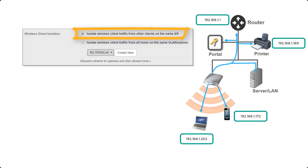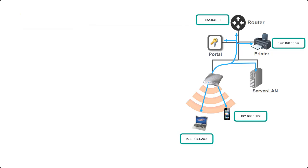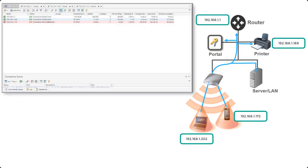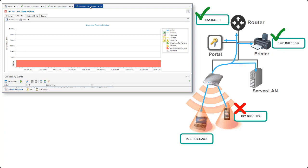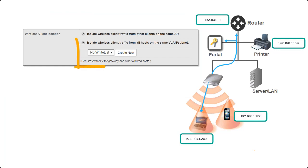The next step is to isolate wireless client traffic from other clients on the same access point. The effect this should have is that all LAN and VLAN traffic remains open, but we are not able to connect to devices connected to the same access point — in this case from my laptop to the iPhone. Going back to our monitoring, we can still see the default gateway and the printer, however we no longer have a connection to the iPhone. Connectivity to the gateway and to the printer is fine, but the iPhone is completely dead, as expected.